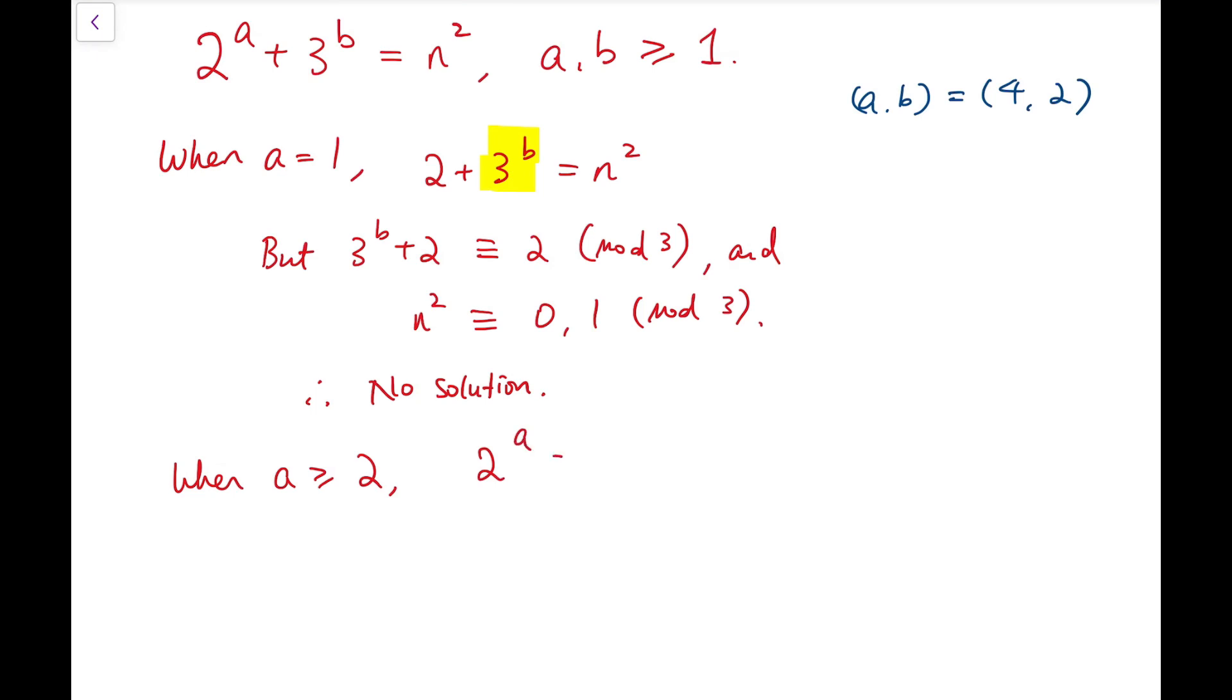Because it's divisible by 2 squared, so 2 to the a is congruent to 0 mod 4. Now we can turn to take a look at mod 4 on both sides of the equation.